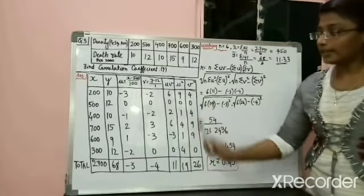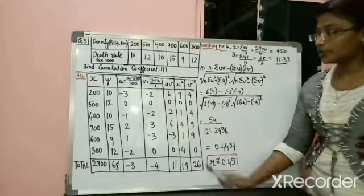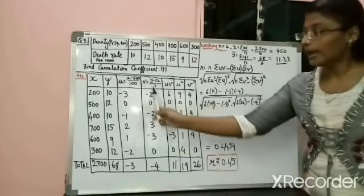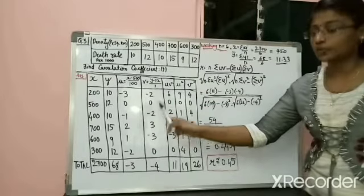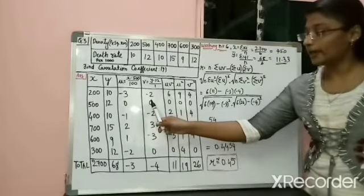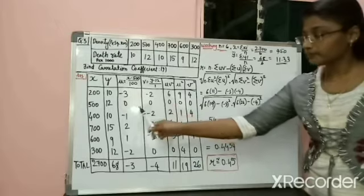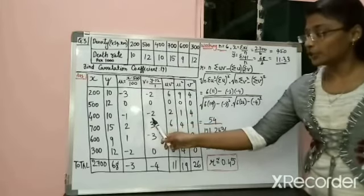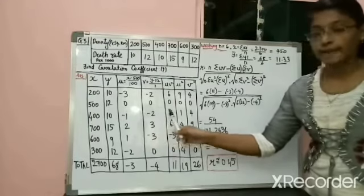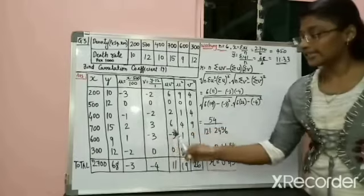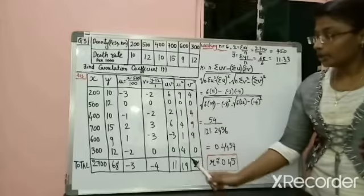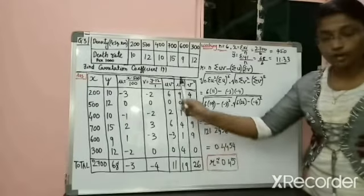Then you have to make the column uv, which means u multiplied by v. So taking column u and column v, multiply them to get uv. So −3 × −2 = 6, 0 × 0 = 0, −1 × −2 = 2, 2 × 3 = 6, 1 × −3 = −3, −2 × 0 = 0. Now you have the column of uv.